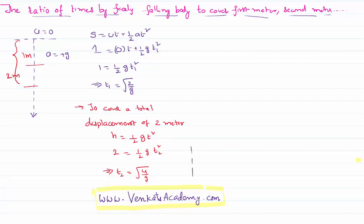But be careful to understand one thing: it is the time to cover the total two meters, but I want the time taken by the body to cover only the second meter. To cover only the second meter, the time taken is the total time taken for the total two meters minus the time taken for the first meter. T2 is nothing but equal to root 4 by g minus t1, which is nothing but equal to root 2 by g.